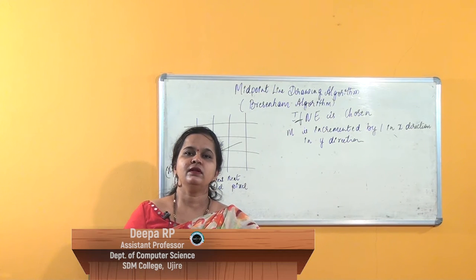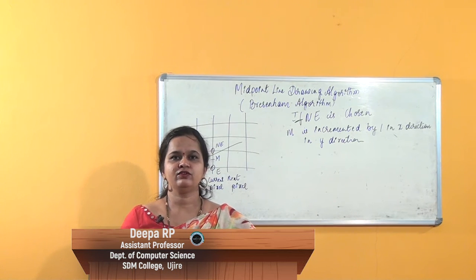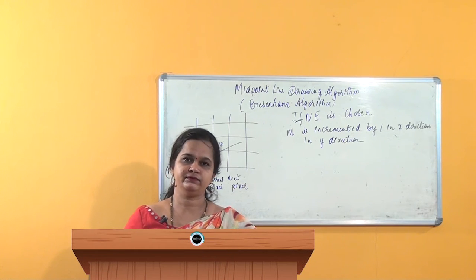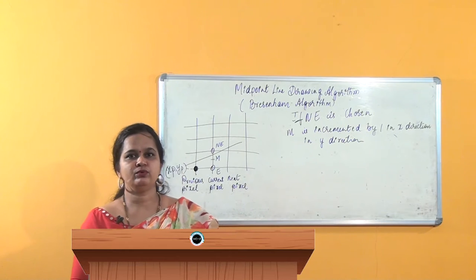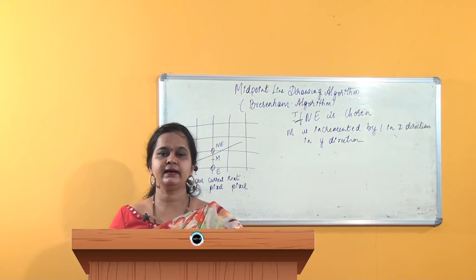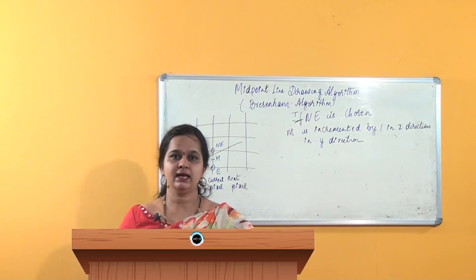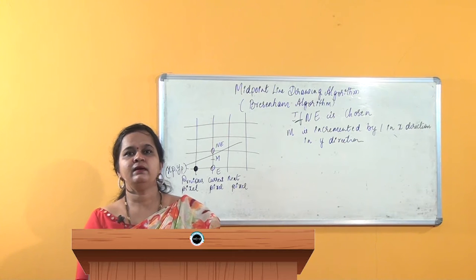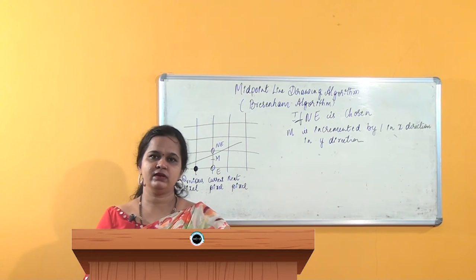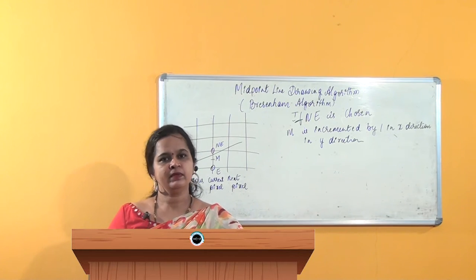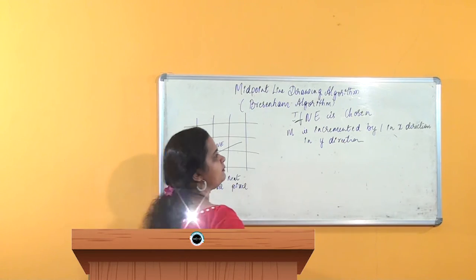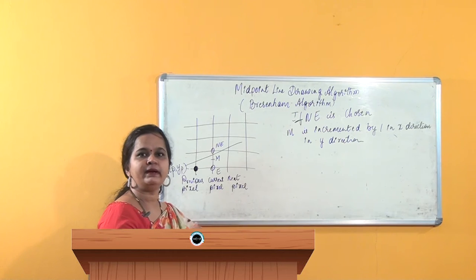Hello students. Now we will start with the next part of the midpoint line drawing algorithm. As discussed in the previous part, we were at the step of selecting NE — that is, the NE pixel is selected — and now we consider what to do with the decision variables. Here, m is incremented by one in both the x and y direction.